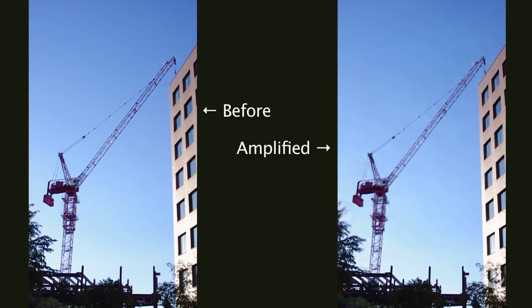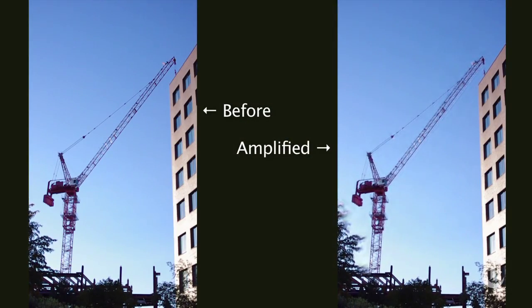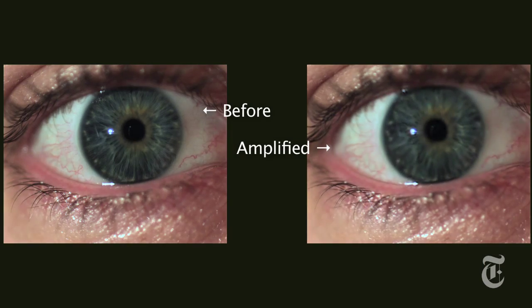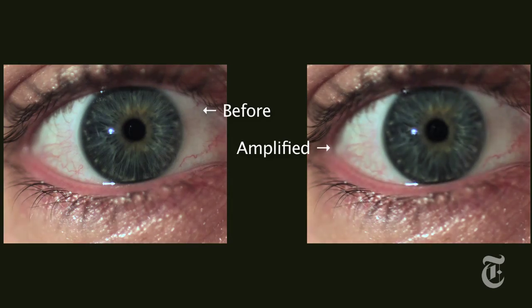What's really new about this research is that we're visualizing the tiny motions. The computer vision community has been able to measure these tiny motions for some time, but there's nothing to see unless you amplify it and show what's there. Once we amplify it and show what's there, there's a whole new world — all sorts of things you can look at.